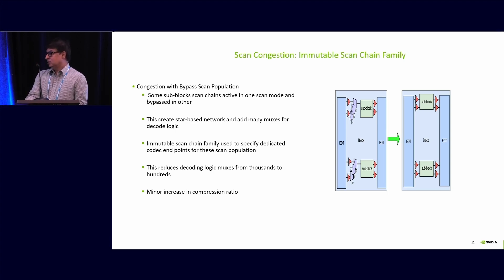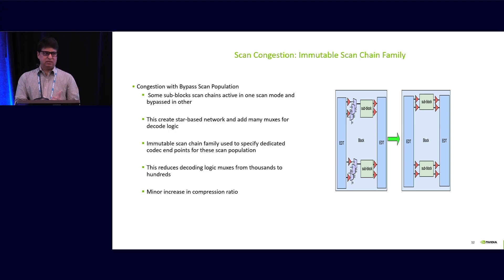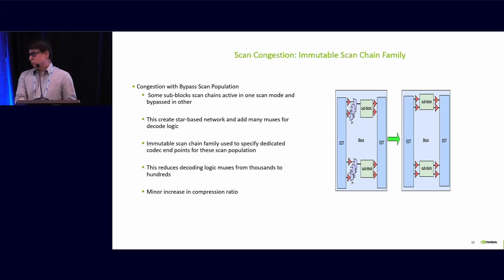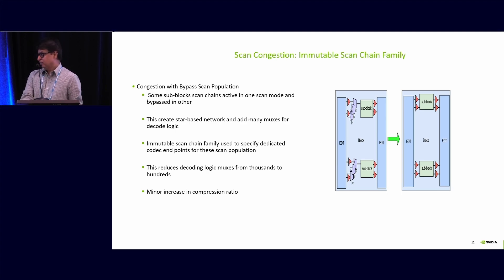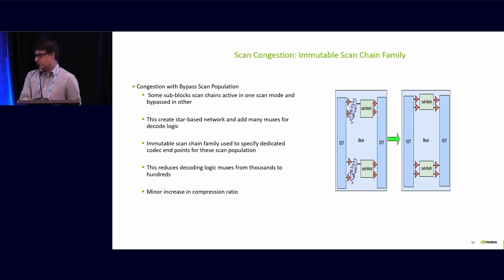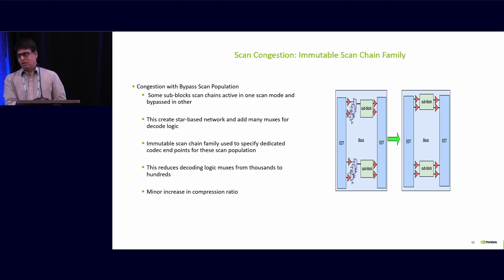Another congestion issue comes from EDT to the sub-block. There are some sub-blocks in which some scan chains are active in one scan mode and bypassed in another scan mode — these are bypass scan chain populations. They add many muxes for the decode logic and create a lot of scan congestion from the EDT to the sub-block. To address this, we define those scan populations — we call them bypass scan populations — as immutable chain families, meaning we define a dedicated endpoint for those scan populations. That reduces the number of muxes from around 1000 to 100, minimizing the congestion, with only a minor increase in compression ratio.